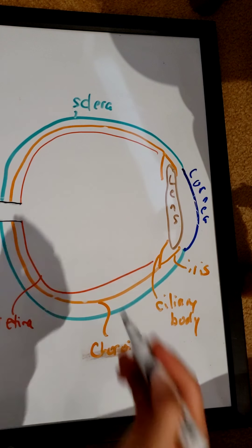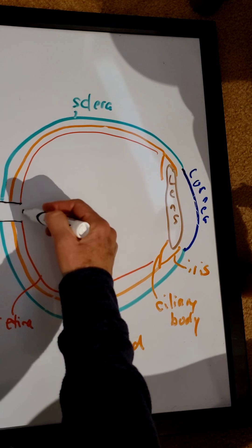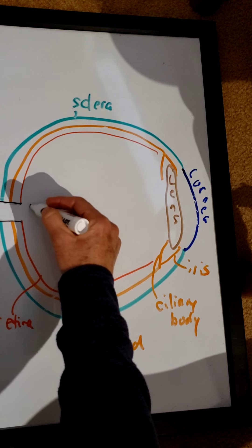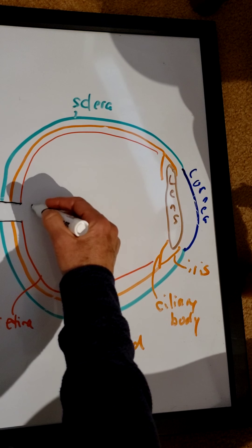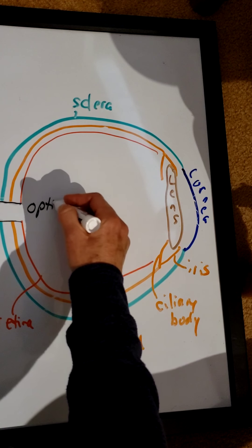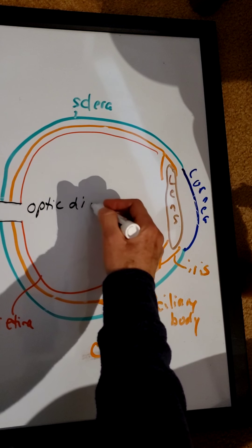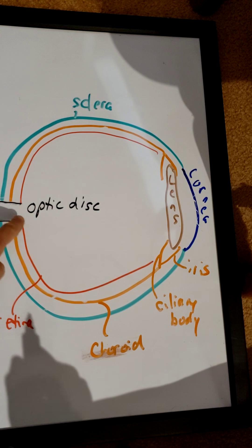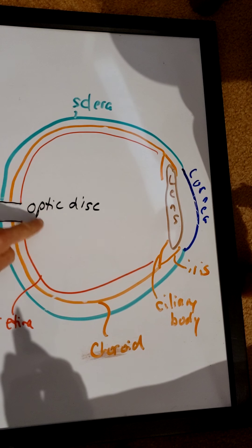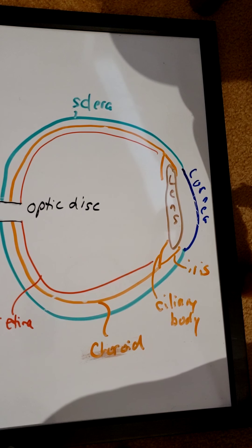So the optic nerve is right here. The spot right here where the optic nerve exits the eye is called the optic disc. You might also know it as the blind spot, and the optic disc is where there are no light receptors because the optic nerve exits the eye right there.